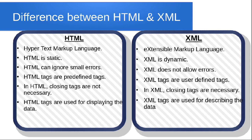HTML can ignore small errors, but XML doesn't allow any errors. XML tags are not predefined, so you have to declare or define your own tags. In HTML, closing tags are not necessary, but in XML closing tags are necessary. Finally, HTML tags are used for displaying data while XML tags are used for describing data — and that makes a huge difference.